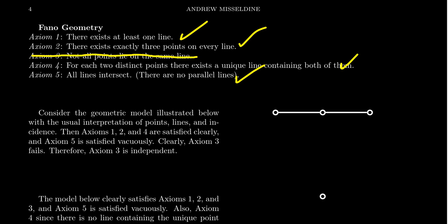Now, as we're proving these axioms are independent, I'm providing models that negate one of the axioms but satisfy all the others. These models are not necessarily unique — there could be other models that satisfy four of the axioms and negate another. But we just need one model to show that the axiom is independent. This model shows that axiom three is independent because we constructed a model of Fano axioms one, two, four, and five, but negates axiom three.